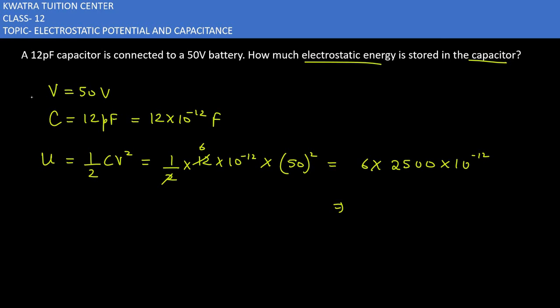You will multiply 6 into 25. Or you will multiply 6 into 25 and multiply 0. 6 into 25 is 150.